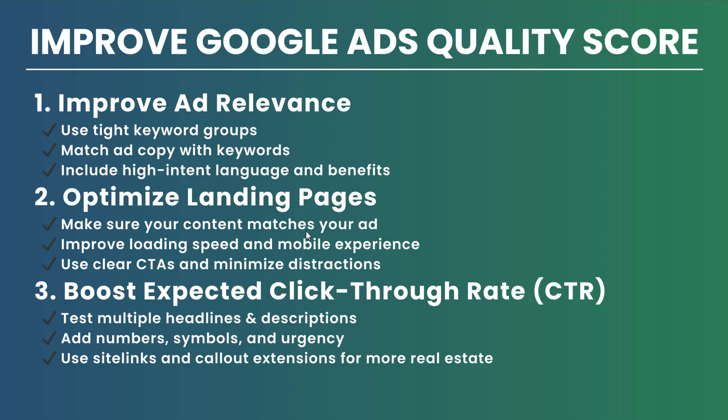Always improve ad relevance — that means tight keyword groups. When creating your ad groups, make sure they are very relevant. If you're targeting plumbing keywords, put drain, leaks, and water damage into their own separate ad groups. Don't put everything into one ad group with one ad and one landing page — it leads to very low quality scores and you might have trouble even serving ads.